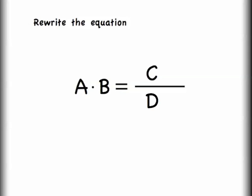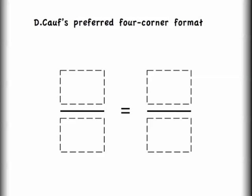Here's another way to look at things. Let's first rewrite this equation. You know that B divided by 1 is the same thing as just having a B. Let's go ahead and say A times B divided by 1 is equal to C divided by D. The reason I'm doing this is because I'm trying to split up this equation into four different quadrants. This is how I like to think about algebra — having these four different corners: numerator on the left, numerator on the right, denominator on the left, and denominator on the right. Once you have things set up in this format, you can apply three simple rules that will allow you to do a great deal of algebra.